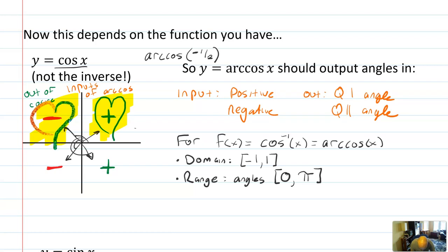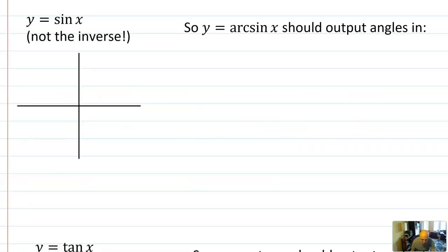One last thought on arc cosine: for a positive input you get a quadrant one angle, for a negative input you get a quadrant two angle. What about a zero input? When is cosine zero? Exactly in the middle of the quadrants at pi over two. I covered cosine first because cosine inverse has different rules than the other two — sine inverse and tangent inverse actually share the same range.